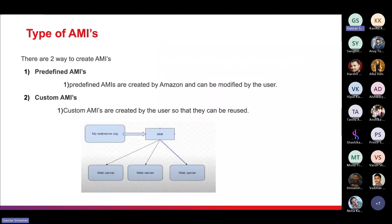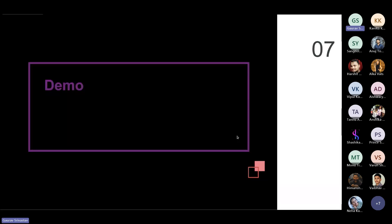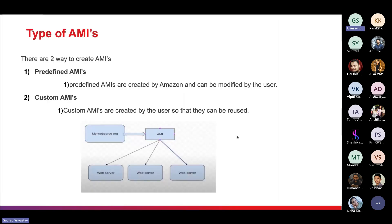There are lots of pre-configured AMIs that we already discussed — you can use any of them to create a server in less time. There are two types of AMIs: predefined AMIs, which we discussed, and custom AMIs, which you can create yourself if you want a specific configuration.